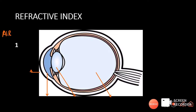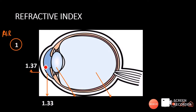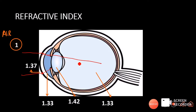Now let us talk about the refractive indices of important structures in the eye. The refractive index of air is about 1, the cornea is about 1.37, the aqueous humor is about 1.33, the lens is about 1.42, and the vitreous humor is about 1.33. Whenever rays of light go from a medium of lower refractive index to one of higher refractive index they undergo convergence. So at the air-cornea interface, and again at the aqueous-lens interface, convergence occurs, and it is because of this converging ability that an image is focused on the retina.